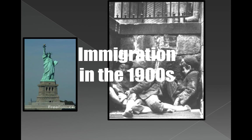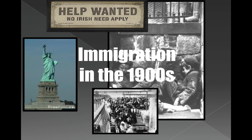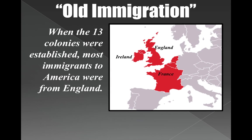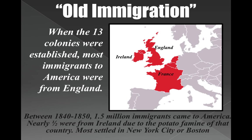The first topic is immigration. We're going to concentrate on the early 1900s, but let's look at the history a little bit. Old immigration — those first early 13 colonies — was mostly from England. But as you get to the 1840s and 1850s, you see about 1.5 million immigrants coming to America from Ireland because of a potato famine, the destruction of the potatoes. They came mostly to New York and Boston.